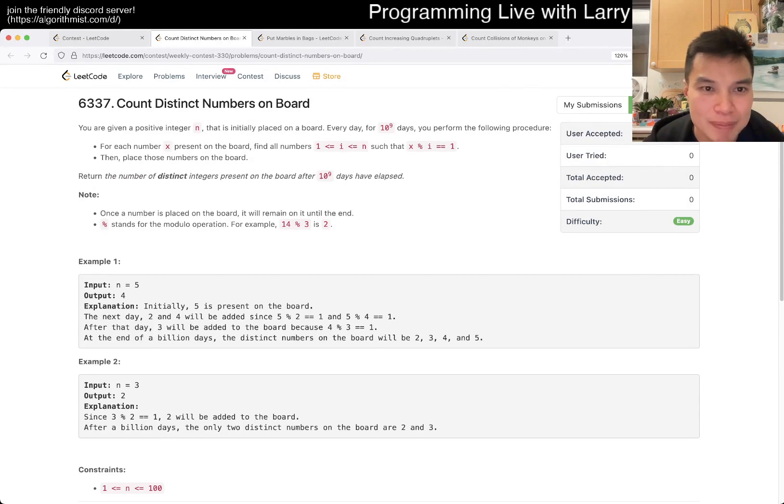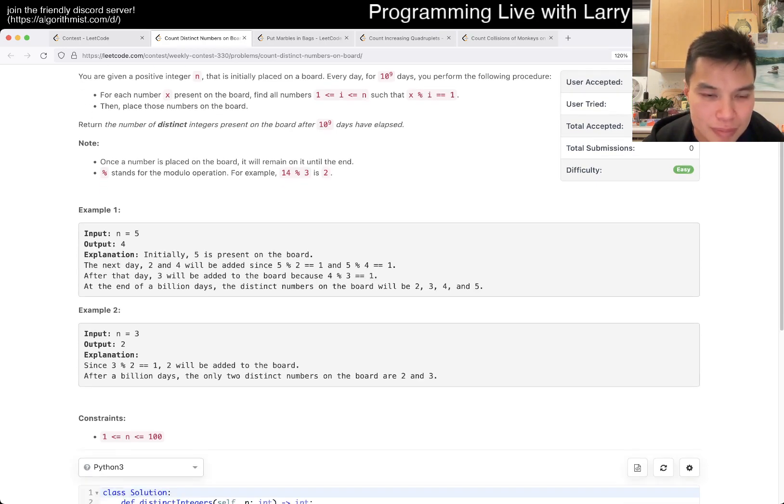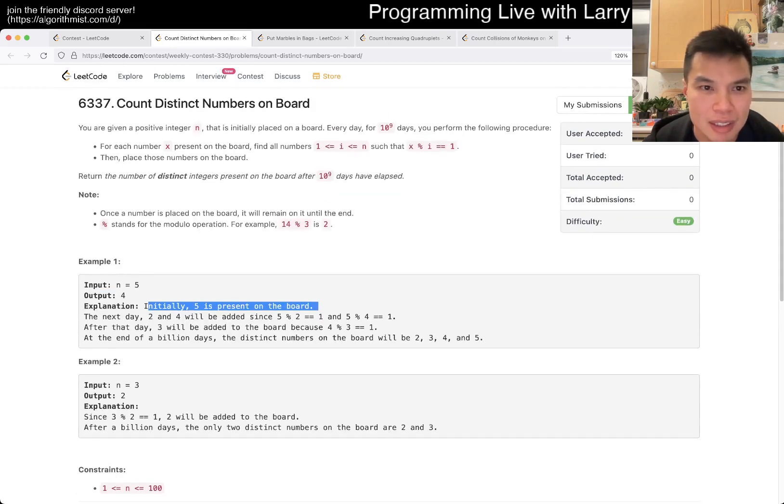And, say what? Given a positive integer n, use some expression, but why not such that? And, place those numbers on the board. For each number, what? Initially, 5 is... Okay. And then for number 5, okay.